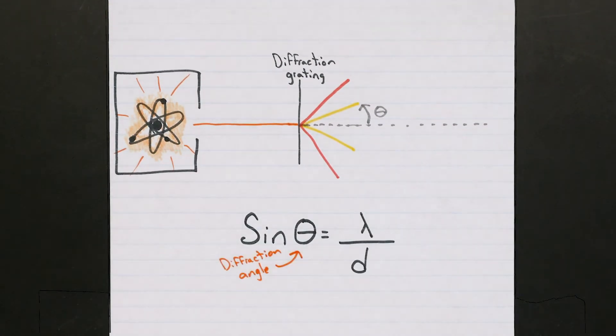Where the sine of the diffraction angle is equal to the photon wavelength divided by the d value for the diffraction grating. More on that later.